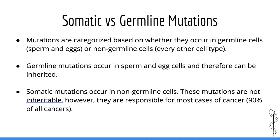If a mutation occurs or is present in sperm and egg cells, they are termed germline mutations. Since the DNA in every cell is derived from a sperm cell and egg cell, germline mutations will be present in every cell of the organism. An example is a child born with a germline retinoblastoma gene mutation — every cell in their body, including the sex cells, will have this mutation. Mutations which occur in non-sex cells are termed somatic. An example is a person with a RAS mutation in their pancreatic tumor — only the cells of the pancreas have this mutation, and since it is not in the gametes, it cannot be passed down.